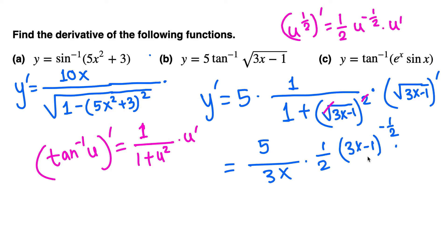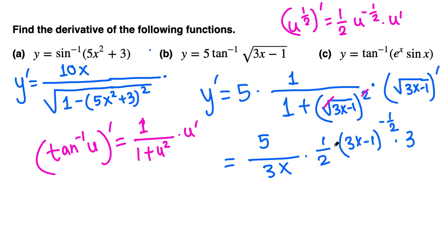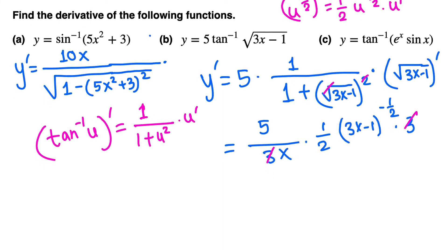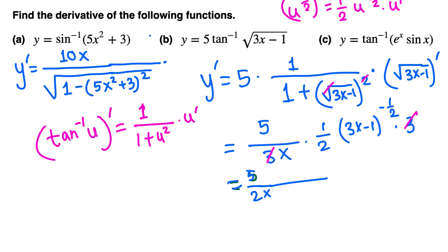The derivative of 3x minus 1 is just 3. The 3 and the 3 in the denominator cancel, leaving 5 times 1/2, which is 5/2, with x on the bottom. The negative exponent moves to the denominator, giving (3x minus 1) raised to positive 1/2, which is the square root of 3x minus 1. That completes part b.